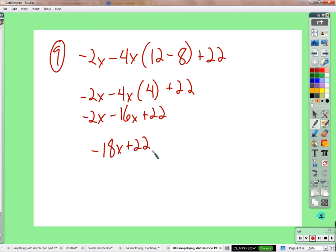Negative 2 makes it 2. No, it makes 18x plus 22. Negative 18x. Right. Next question. Good.